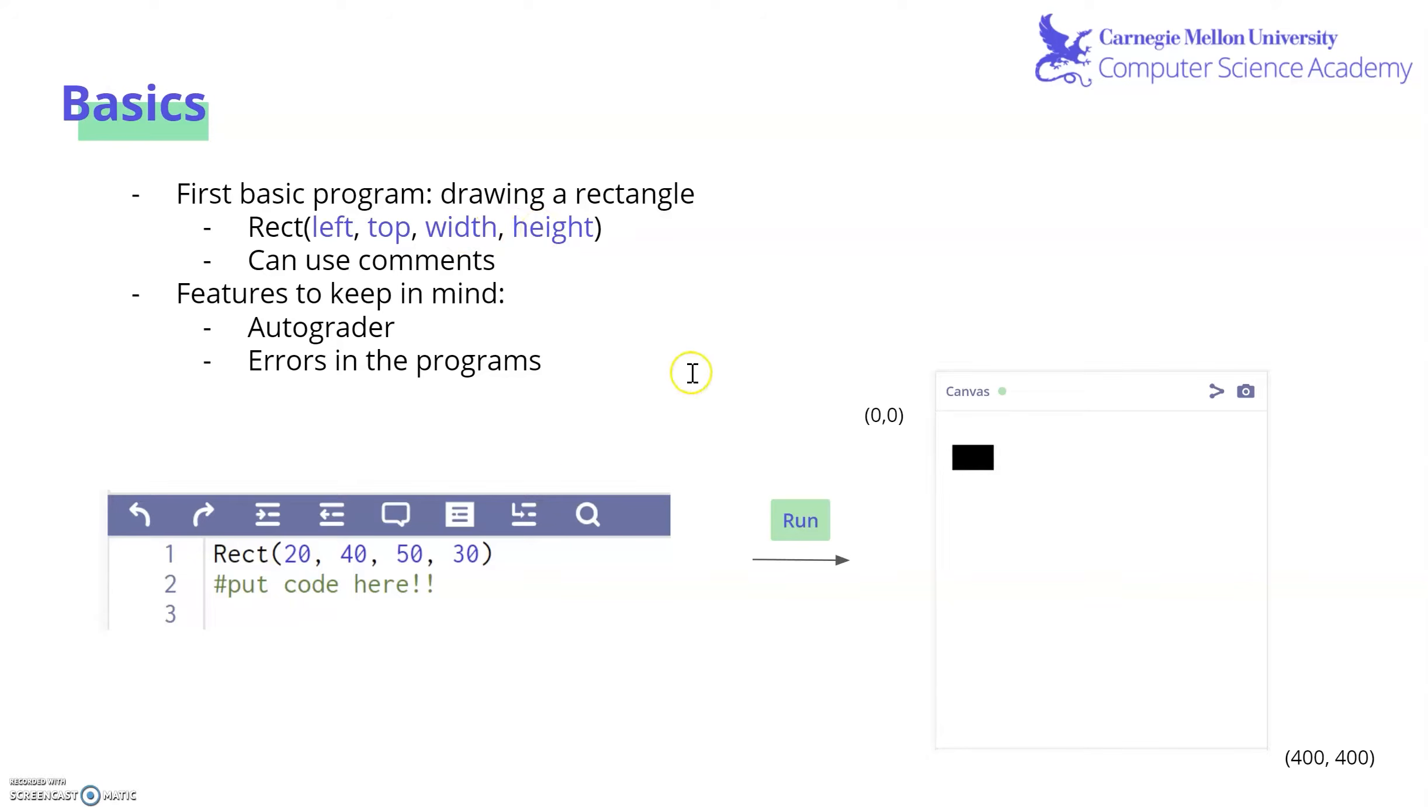When we put in numbers there, we choose, as you can see in this example, the x value, the y value, and then the width and the height.